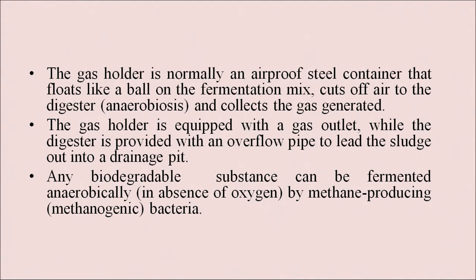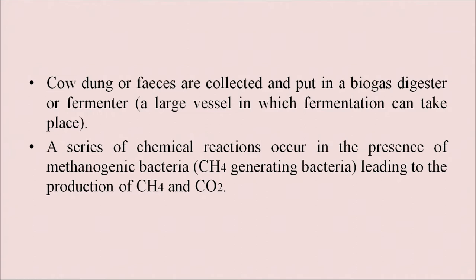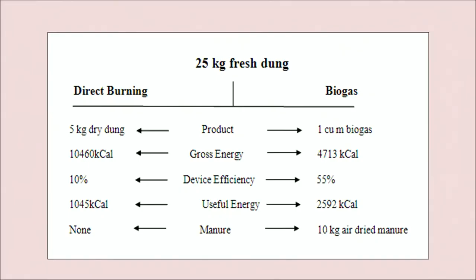Any biodegradable substance can be fermented anaerobically, that is in the absence of oxygen, by methane-producing bacteria also called methanogens. Cow dung or feces are collected and put in a biogas digester or fermenter, a large vessel in which fermentation takes place. A series of chemical reactions occur in the presence of methanogenic bacteria leading to the production of methane and carbon dioxide. From 25 kg of fresh dung one can compare the advantages of using it as biogas versus using it directly.